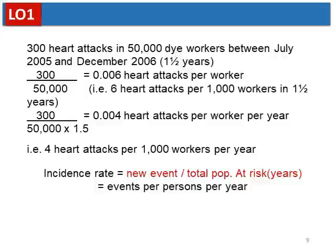Calculating: 300 divided by 50,000 gives 6 per 1,000 heart attacks per worker over one and a half years. Since incidence is always expressed relative to one year, we use person-time: divide 300 by (50,000 × 1.5). Multiplying by 1,000 gives 4 heart attacks per 1,000 workers per year. The figure changes from 6 to 4 when we standardize to one year — this is why the time adjustment matters.